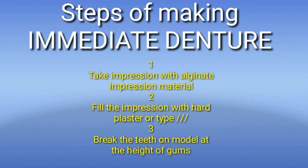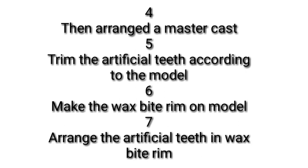Steps of making an immediate denture. Number one: take impression with alginate impression material. Number two: fill the impression with hard plaster or type 3. Number three: break the teeth on the model at the height of the gums. Number four: arrange a master cast. Number five: trim the artificial teeth according to the model. Number six: make the wax bite rim on the model. Number seven: arrange the artificial teeth in the wax bite rim.